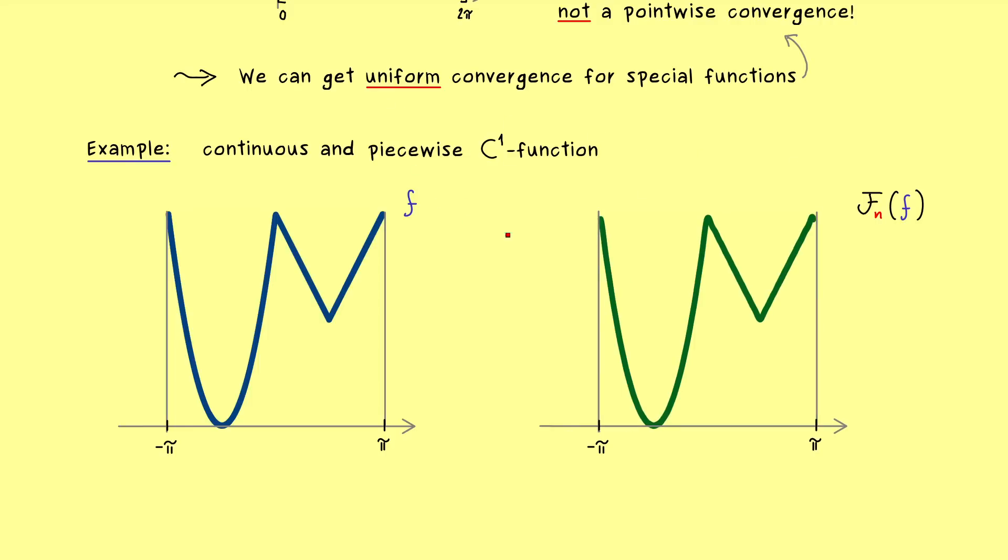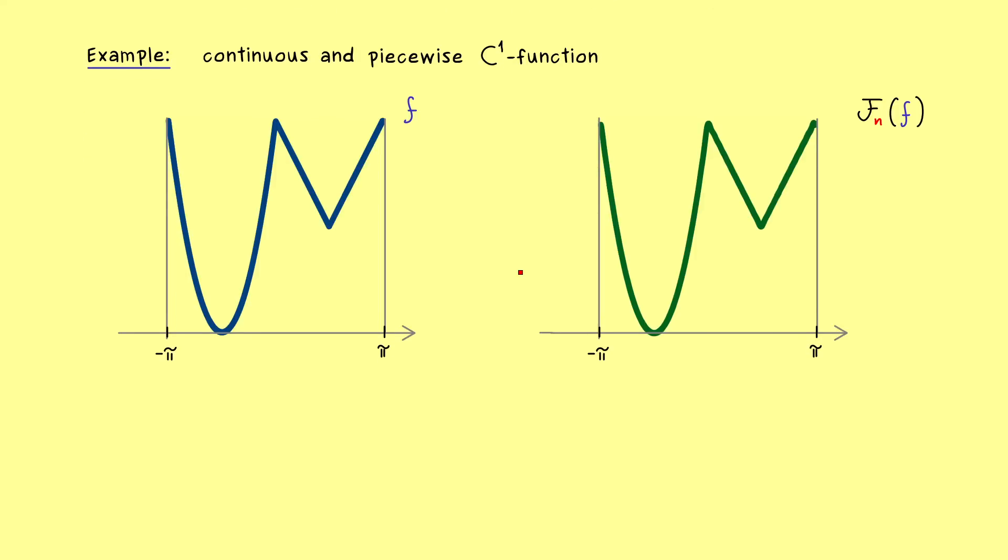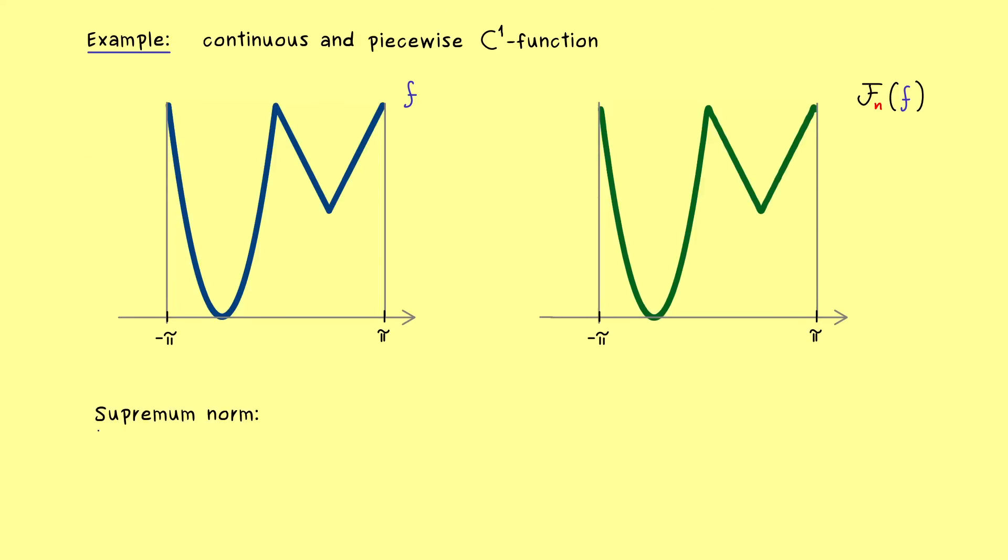Instead of the L2 norm now we have to deal with the supremum norm. Hence what we need is a relation between the two norms. Therefore let's first write down what we know about such a relation. The supremum norm is also often called the uniform norm simply because it describes the uniform convergence. The common notation is the norm symbol with an infinity sign in the index. Since we deal only with 2π periodic functions we can restrict the supremum to a bounded interval. This means we take the supremum of the absolute value of the function f(x), where x goes through an interval from minus π to π.